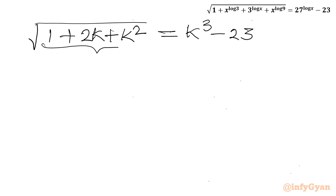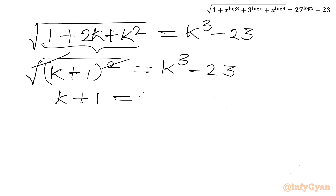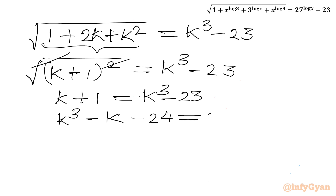The expression under the square root is a perfect square: 1 plus 2k plus k² equals (k+1)². So the square root simplifies to just (k+1). Therefore our equation becomes k+1 equals k³ minus 23.